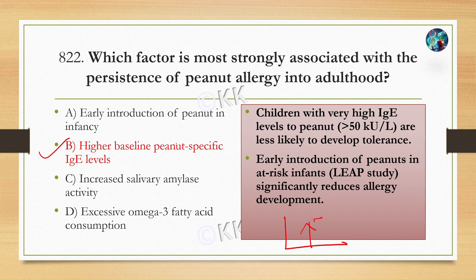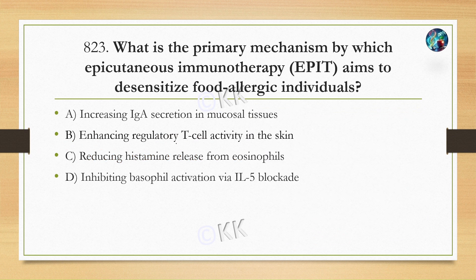अगर high IgE levels peanut के बारे से देखा जाता है, which is more than 50 kilo unit per liter, उन बच्चों में generally यह जो tolerance है, यह develop होने का chances ज्यादा होता है। Early introduction of peanut अगर हम करते हैं, तो यह allergist का chances कम हो जाता है।